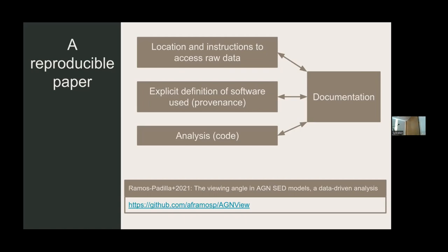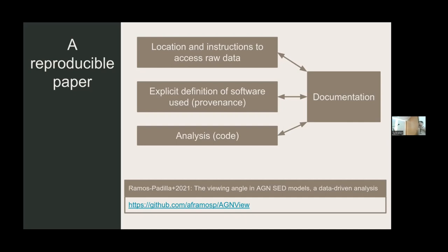A reproducible paper doesn't need to be a one-button end-to-end automatic system — that can be an aspiration. At minimum, you need: location instructions for how to access raw data; explicit definition of the software used — this is very important, because Python 2 code won't run in Python 3; and the analysis code and scripts, along with the order in which they are executed.